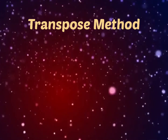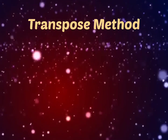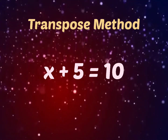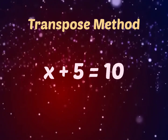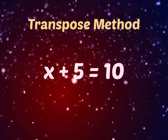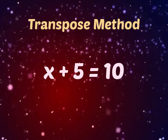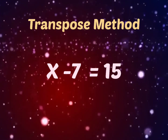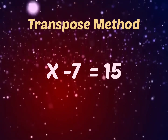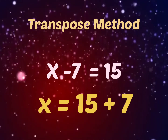Transpose method. While doing the transpose method, we need to understand a few concepts. For the equation x plus 5 is equal to 10, we need only x on the left hand side. The term 5, which is added on the left hand side, is transposed to subtract on the right hand side, giving x is equal to 10 minus 5. The second concept: for the equation x minus 7 is equal to 15, the 7 subtracted on the left hand side is transposed to add on the right hand side, giving x is equal to 15 plus 7.